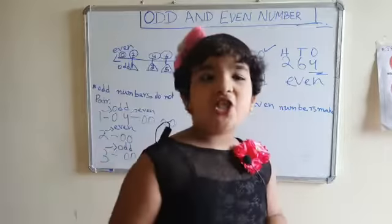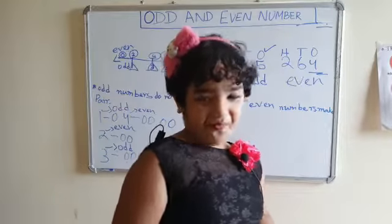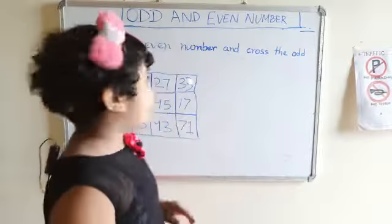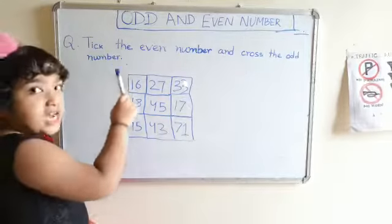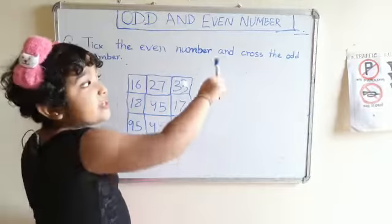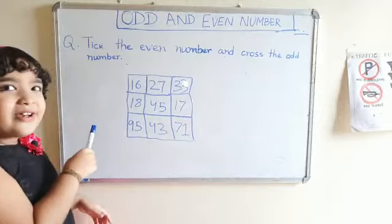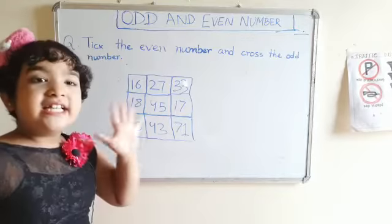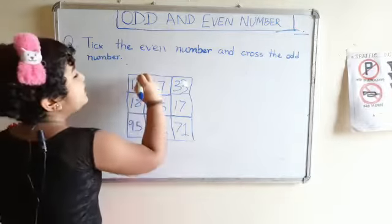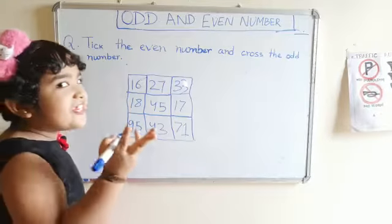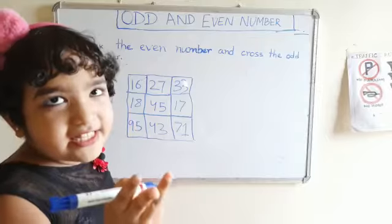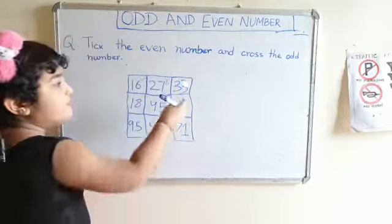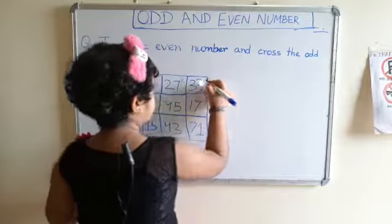चलिए कुछ questions करते हैं. Let's do the question. First question: tick the even number and cross the odd number. 16 के ones place में 6 है, so हम इसे tick करते हैं. 27 के ones place में 7 है, so यह odd number है, हम इसे cross करते हैं. वैसे ही 33 को cross, और 18 को tick लगाएंगे.